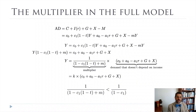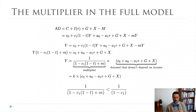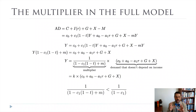In the full model, because taxes and imports show up as positive numbers in the denominator, our multiplier is less than in the simpler model. We'll stick with the simpler model since this is an introductory course, but it's important to remember that taxes and imports are leakages — they leak out of the system because you send money to the government in taxes (which doesn't get re-spent) and you send money overseas by buying imports (which gets spent in that economy, not ours).